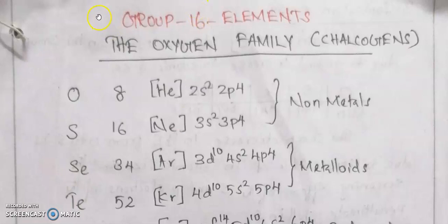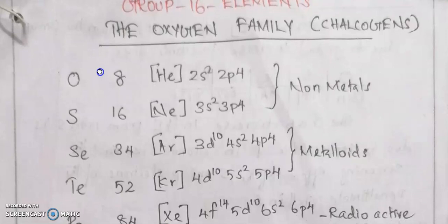Today we are discussing representative elements, second part: Group 16 elements, the oxygen family. The oxygen family are so-called chalcogens. The members are oxygen, sulfur, selenium, tellurium, and polonium.